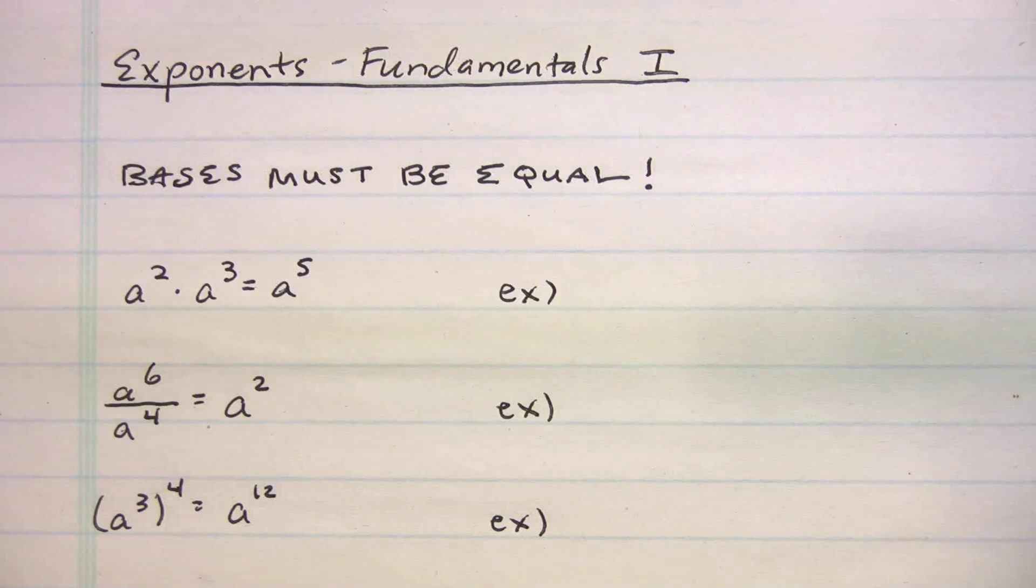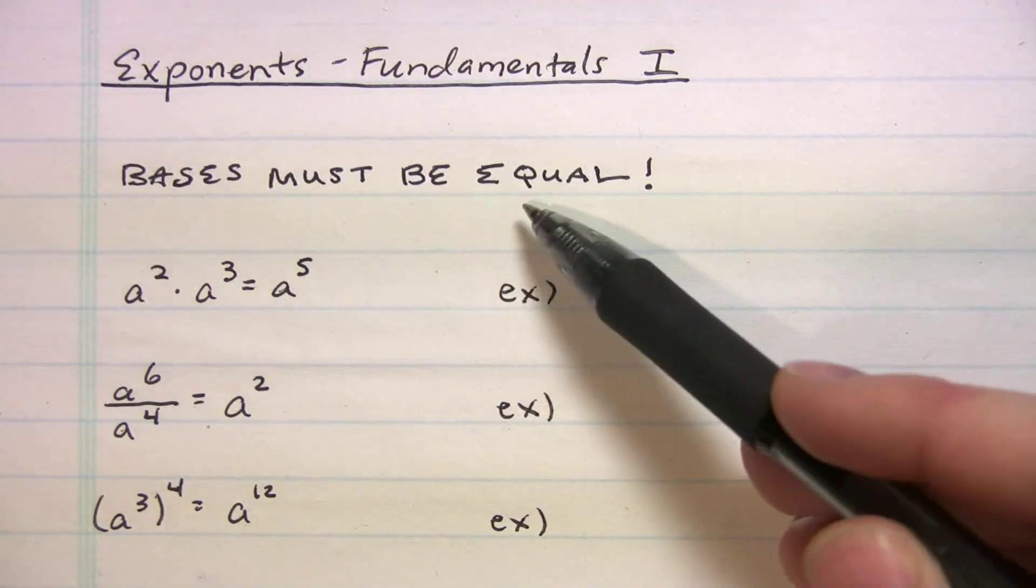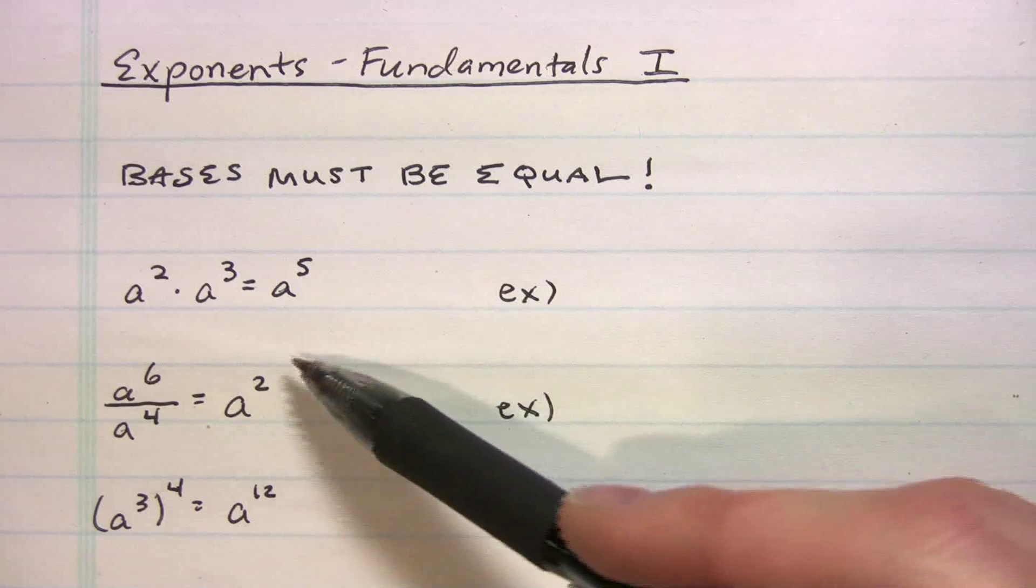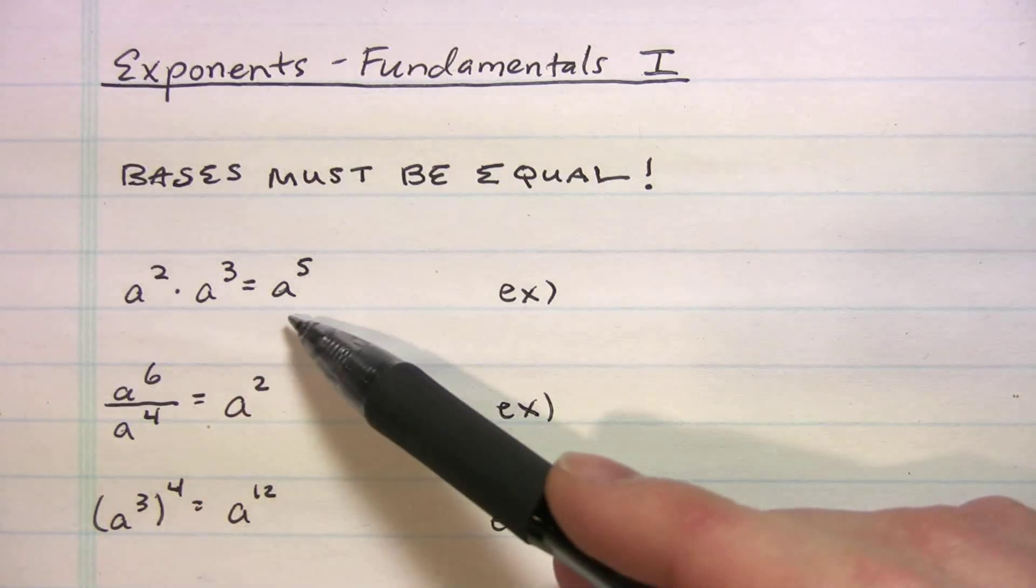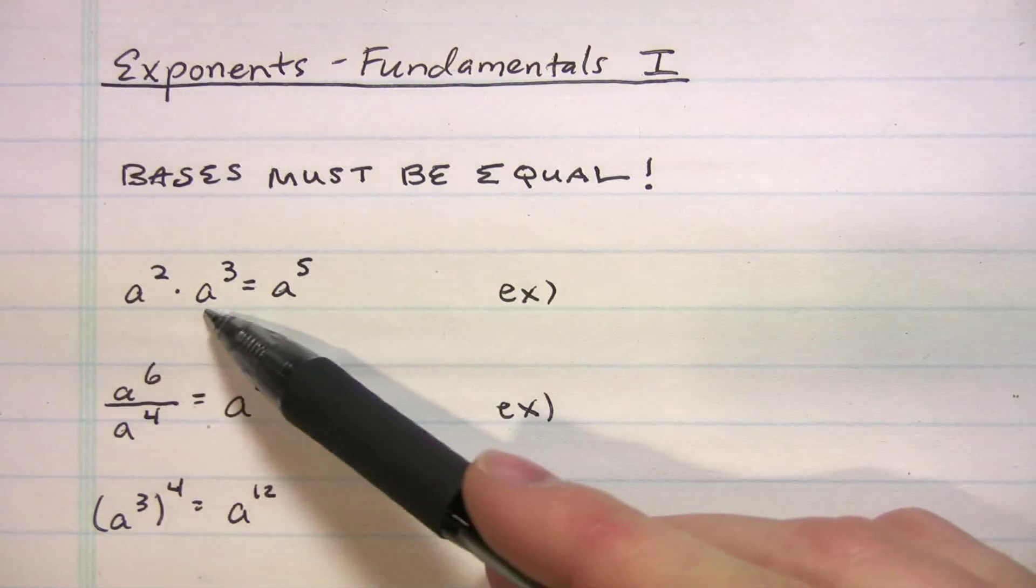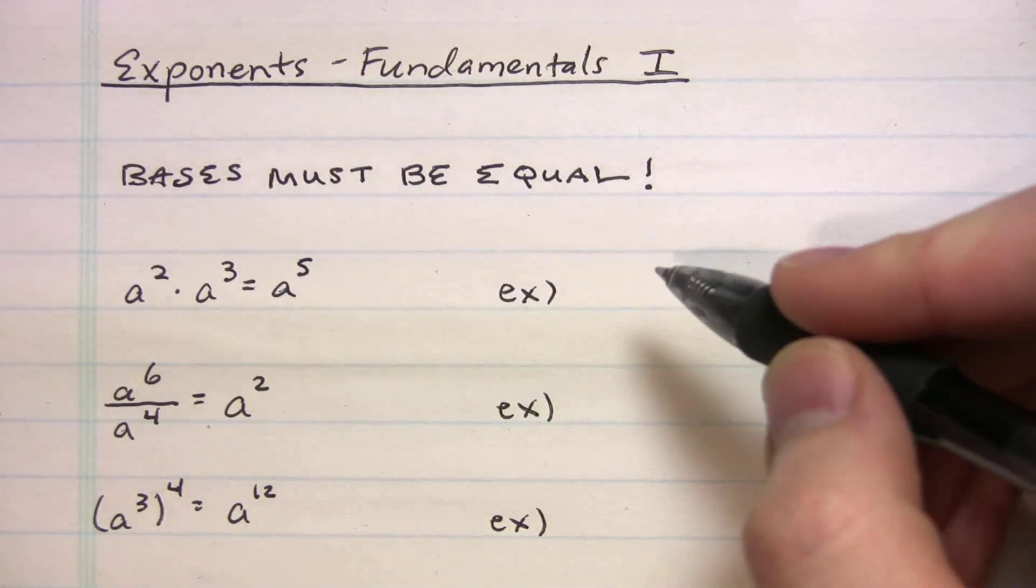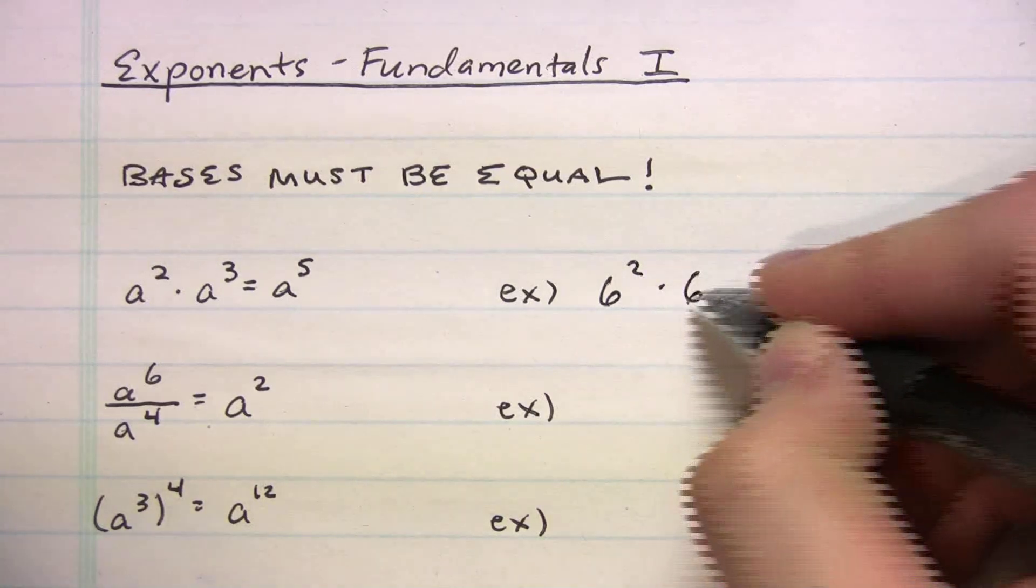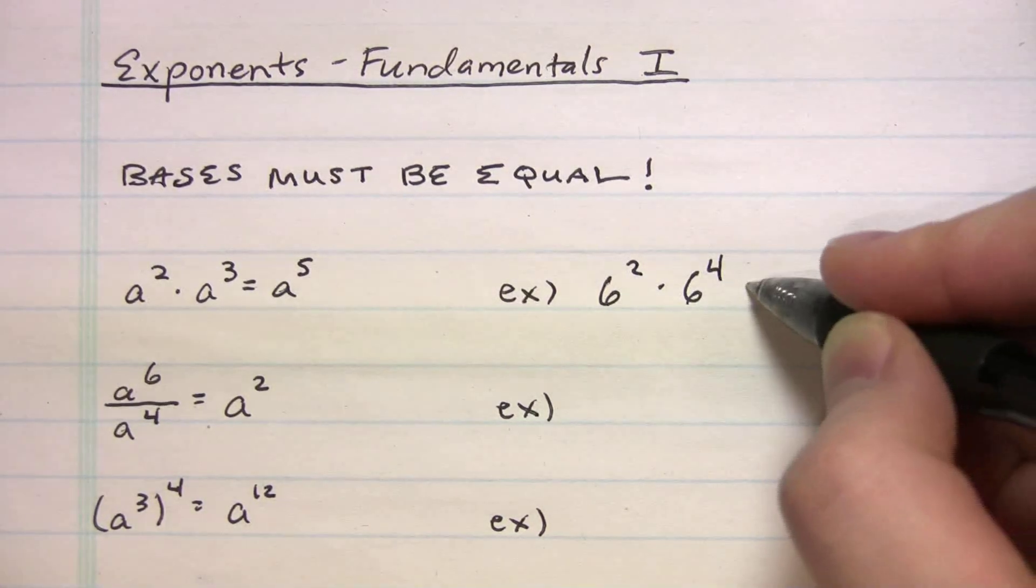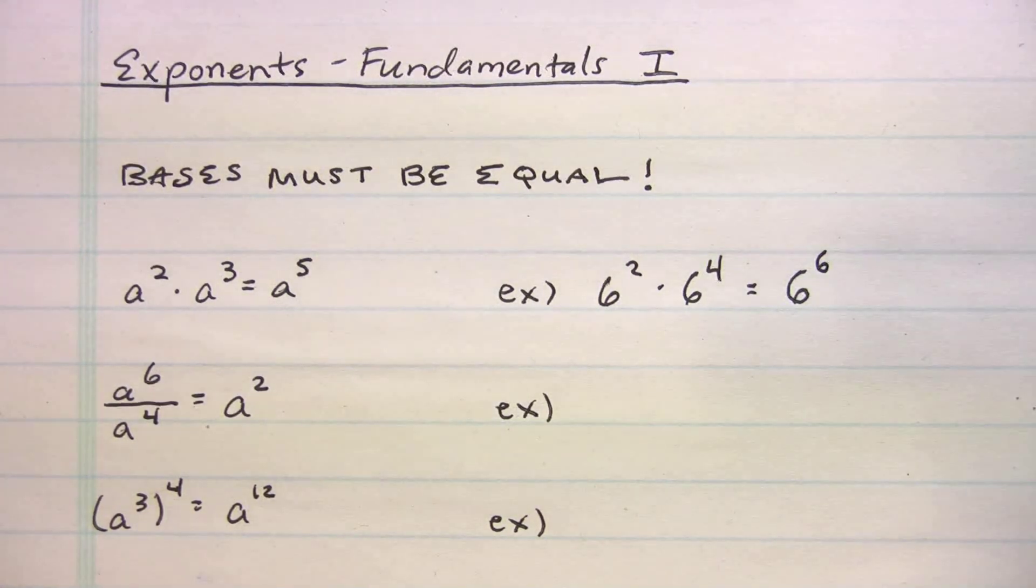Probably the first and most important rule you've heard in school, and I'm just going to reiterate it here, is that the bases must be equal when you're multiplying or dividing numbers with exponents. So if you take a look at this example, we're multiplying here. a squared times a to the third, that's going to give you a to the fifth. All you do when the bases are equal and you're multiplying, you add the exponents. So let me give you an example here and you can follow along at home. Let's say we had six squared times six to the fourth. All we're going to do is keep the base, add the exponents, six to the sixth.